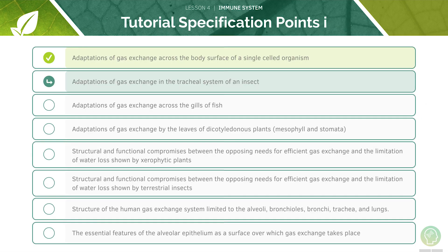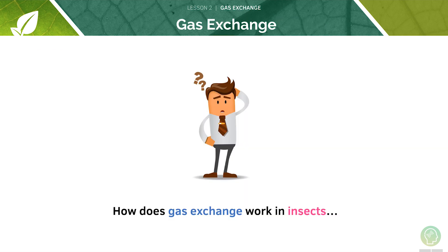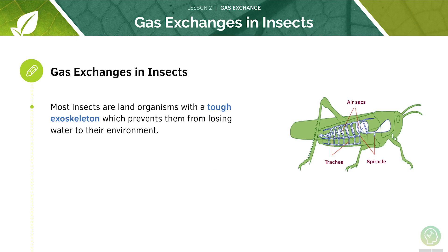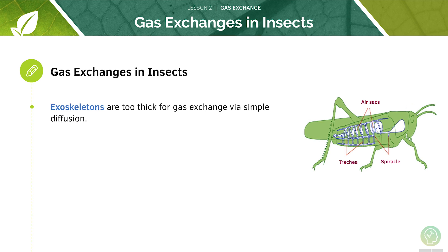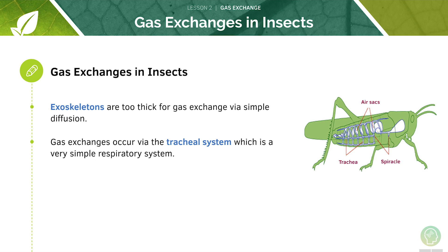How does gas exchange work in insects? Insects have a tough exoskeleton, which helps to prevent them from losing water from their bodies as well as protecting them from their environment. Because of their structure, exoskeletons are usually too thick for gas exchange by simple diffusion. Gas exchange has to occur by a respiratory organ system known as the tracheal system — a very simple respiratory system found in many insects.